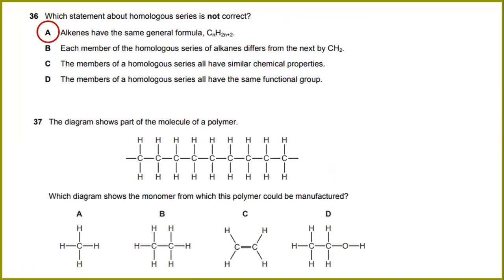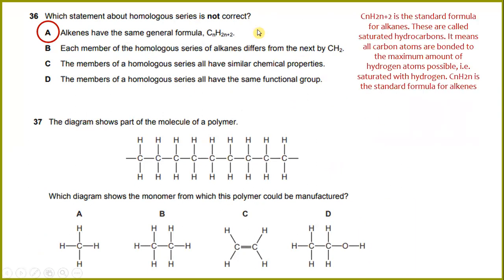Which statement about homologous series is not correct? Alkenes have the same general formula CnH2n+2. It is not correct because the standard formula for alkane is CnH2n+2. These are called saturated hydrocarbons. It means all carbon atoms are bonded to the maximum amount of hydrogen atoms possible. So the answer which is not correct is alkene. This formula is mainly for alkane.